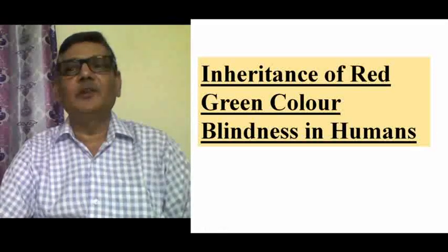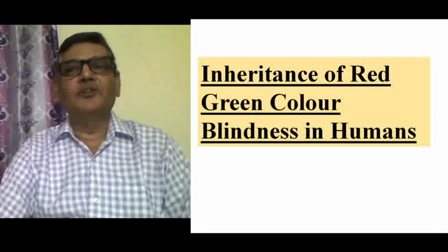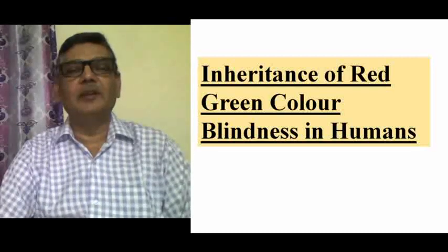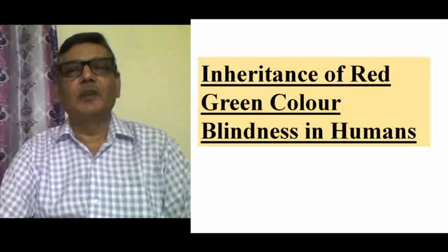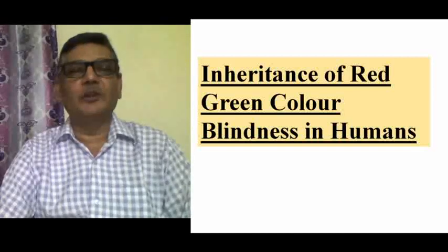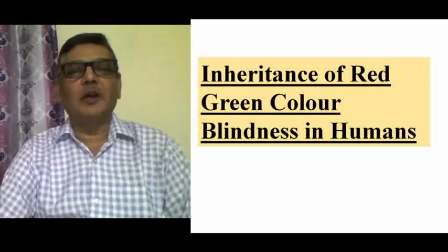There are three different types of color blindness. The first one is red-green color blindness, the second one is blue-yellow color blindness, and in very rare conditions complete color blindness would be there, in which a person will not be able to identify any specific color.